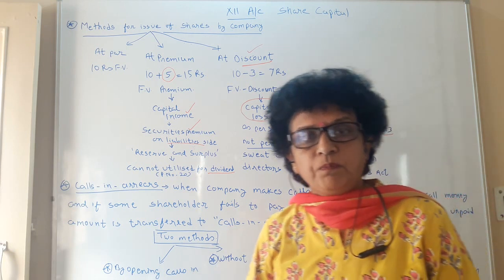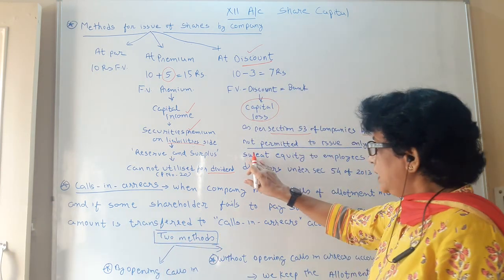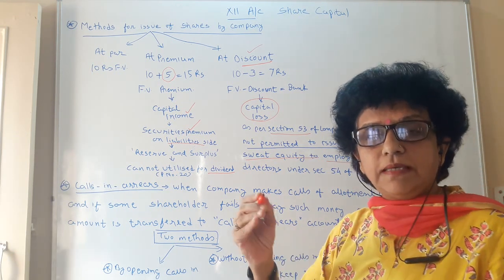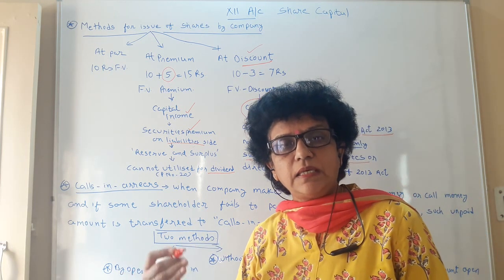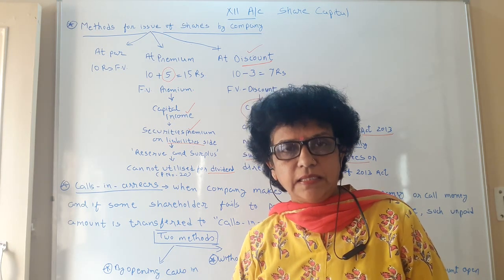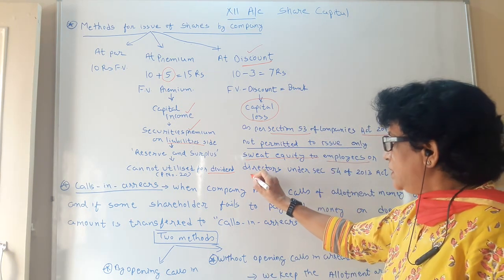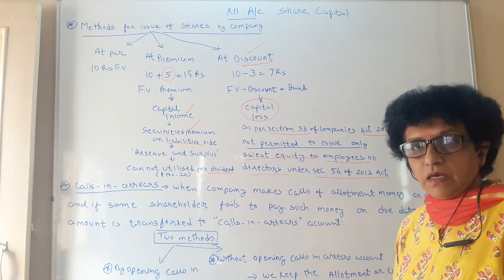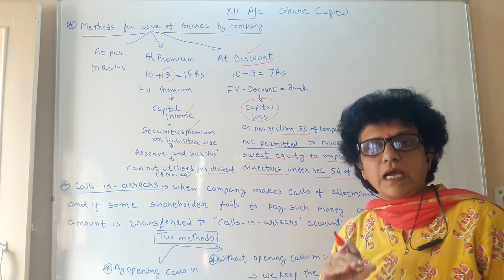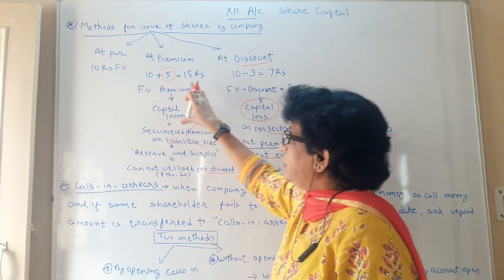Earlier companies used to issue shares at discount, but now as per the new Companies Act this concept is cancelled. Only sweat equity shares — shares given to employees as a token of gratitude for their dedication — can be issued at discount. These may be given to directors under section 54 of the Companies Act 2013. So it means that only a very restricted use of discount is now allowed. In this chapter, we are going to do examples of at par and at premium only.